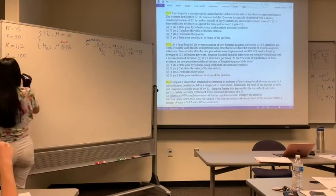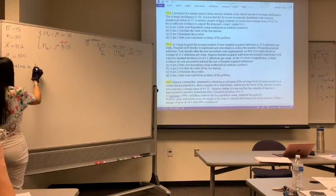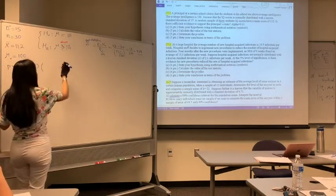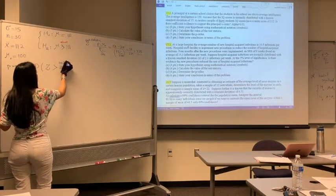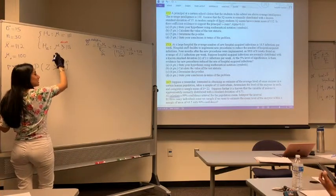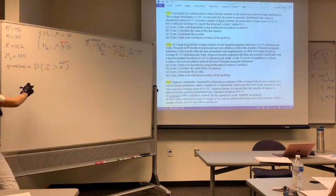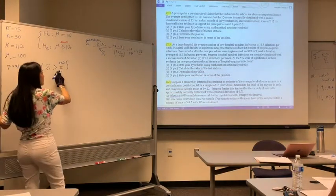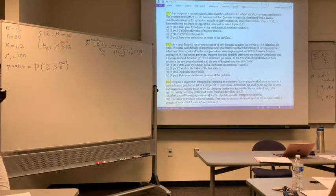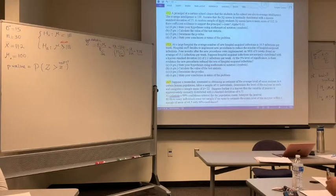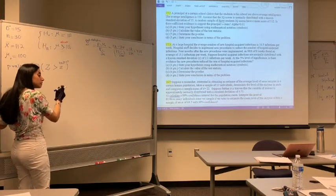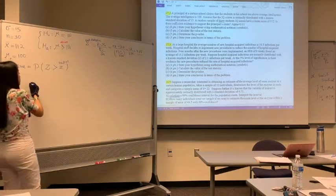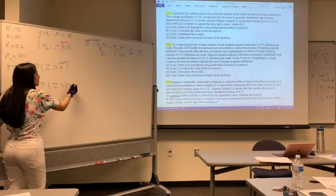The next step is to find the p-value. Because the sign in the alternative is greater than, the p-value is the probability of Z greater than the test statistic. We choose the sign for the p-value according to the alternative sign. If the alternative had a less-than sign, we'd use less than. If the alternative was not equal to, we would say two times the probability of Z greater than the absolute value of the test statistic.